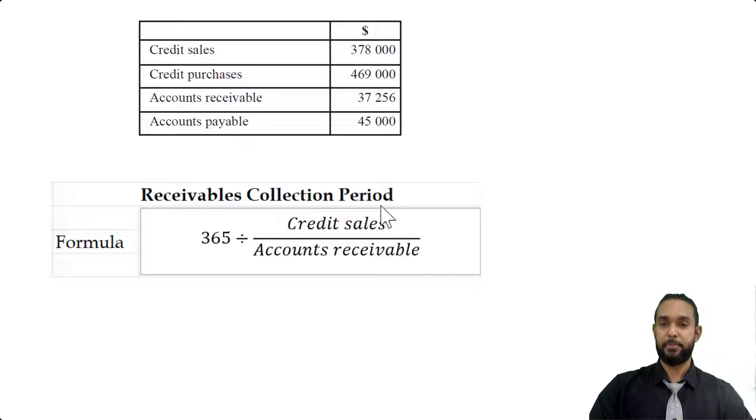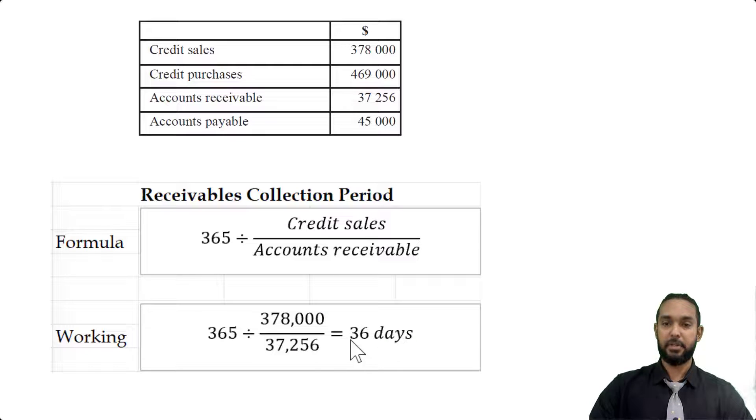So the formula for the receivables collection period is 365 divided by credit sales divided by account receivable. So credit sales divided by account receivable is what we call the receivables turnover or the number of times per year our credit customers repay us. To turn that into a number of days that it takes for the customers to repay, we take 365 and divide it by that same ratio. So the credit sales was 378 and the account receivable was 37,256. So we're going to plug those right inside of here. And we see it takes just about 36 days for our customers to pay us back on average.